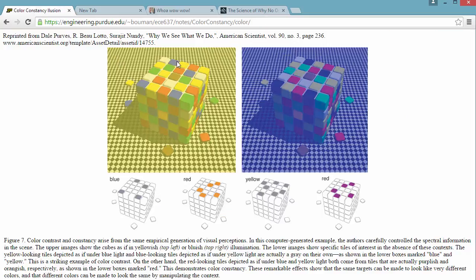I have a link in the description here from Purdue University. If you look at these photos here, this looks like red. That's actually purple. This looks like yellow right there. That's actually gray. And you can see it down here.